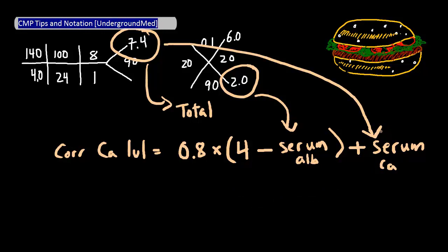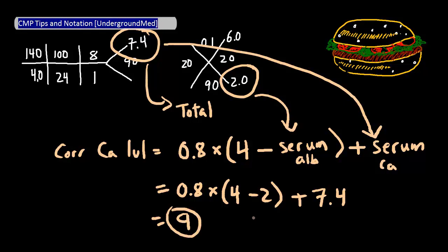If a corrected calcium level is within the normal range for calcium, which is 8.5 to 10.2, then your patient is actually not hypocalcemic. And in this example, the corrected calcium level would be equal to 0.8 times 4 minus 2 plus 7.4, and you should get 9 if I did my math right, which means our patient is not hypocalcemic. Cool, right?